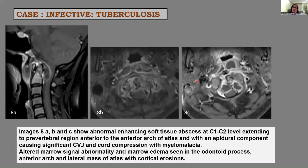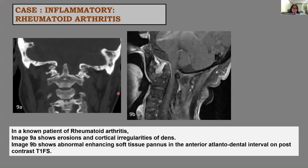Next, a patient with neck pain for one year. Images 8A, 8B, and 8C show abnormal enhancing soft tissue abscesses at the level of C1 and C2, extending into the pre-vertebral region anterior to the anterior arch of atlas, with an epidural component causing significant compression at the CVJ and cord compression with myelomalacia. There was also altered marrow signal with marrow edema in the odontoid process, anterior arch of C1, and lateral mass of C1. The abscess was tubercular in origin.